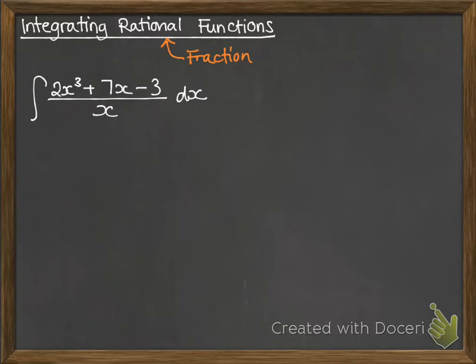Say you've got something like this. This is a fairly simple one. If you wanted to integrate this function, then you want to separate out those pieces of the fraction. Because we've got a simple denominator, that's fairly straightforward to do. So we can take each part of the numerator and write it over the denominator as separate fractions.